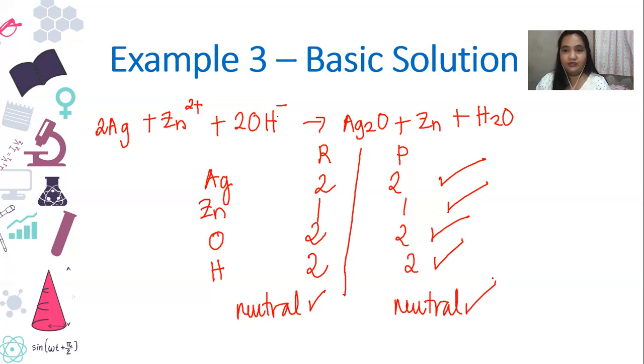And then afterwards, you do the last step, which is checking of elements. For you to be able to say that your reaction is balanced, all the elements should be the same in both reactant and product side. And of course, the charge should also be the same. Otherwise, it is not a balanced reaction. Hopefully, you got to see and understand how to balance equations.